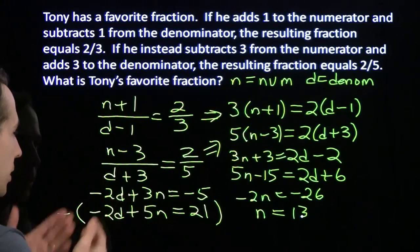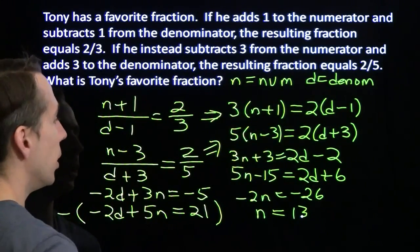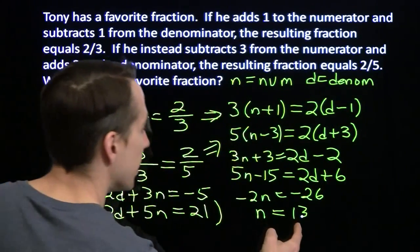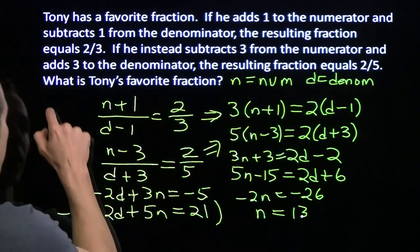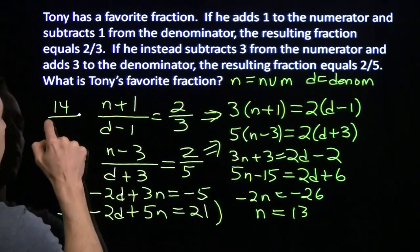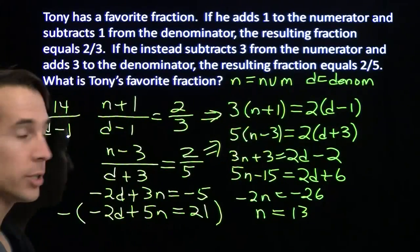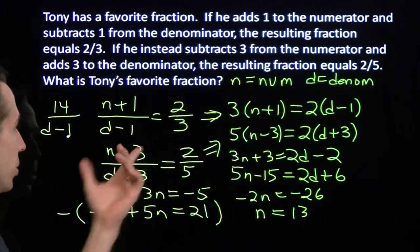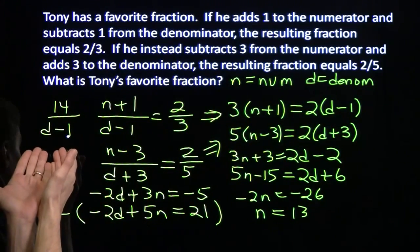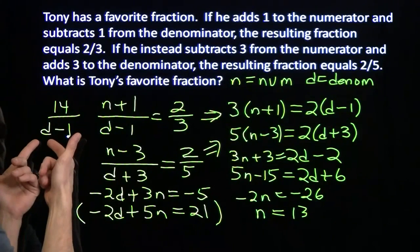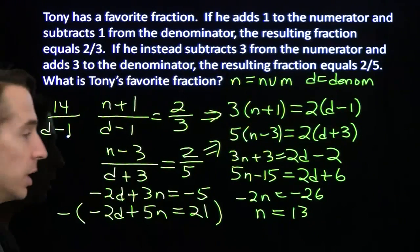Now we have to go back and find d. And let's see which one of these. You know what? I'll use this up here. I can take this 13, put it in up there, and we'll get 14 over d minus 1 is 2 thirds. 14 over what is 2 thirds? This has to be 21. 14 over 21 is 2 thirds, so d has to be 22.